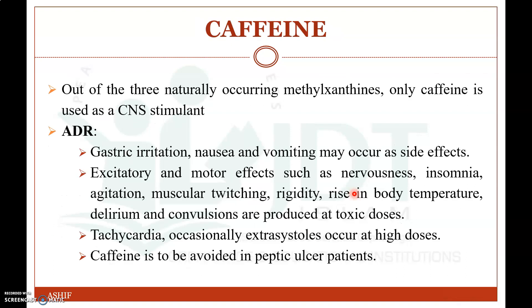The last drug is caffeine, the only CNS stimulant of the methylxanthines. Its mechanism of action and detailed pharmacology are discussed with respiratory drugs used in asthma. Adverse drug reactions include gastric irritation, nausea, vomiting, and excitatory and motor effects such as nervousness, insomnia, agitation, muscular twitching, rigidity, rise in body temperature, delirium, and convulsions at toxic doses. Tachycardia may occur at high doses, and it should be avoided in patients with peptic ulcer.